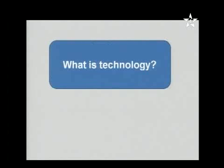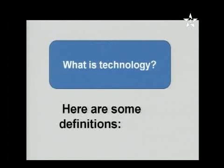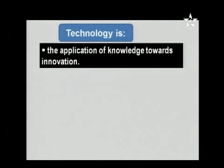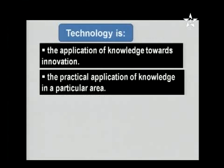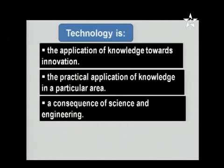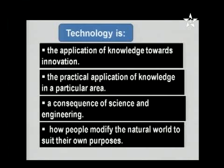So, what is technology? Here are some definitions. Technology is the application of knowledge towards innovation. Second definition: technology is the practical application of knowledge in a particular area. Third, technology is a consequence of science and engineering — 'consequence' meaning a result. Finally, technology is how people modify the natural world to suit their own purposes. The verb 'modify' means change or readjust.